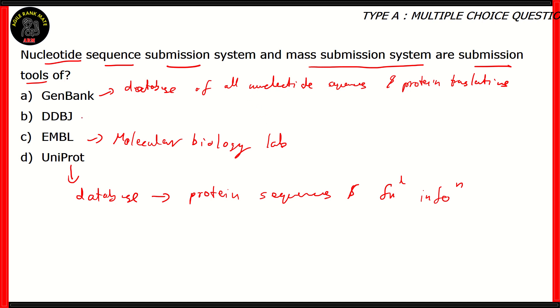Finally, DDBJ is the DNA databank of Japan. So this databank is involved in collecting DNA sequences. If you can see, our question asks about submission systems. These are two types of submission systems and these are usually related with databanks.